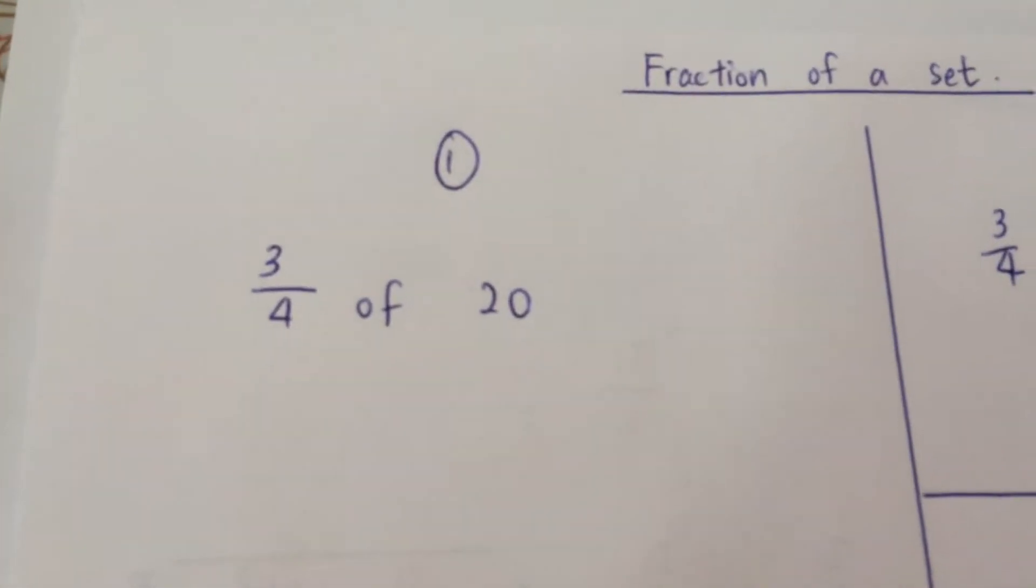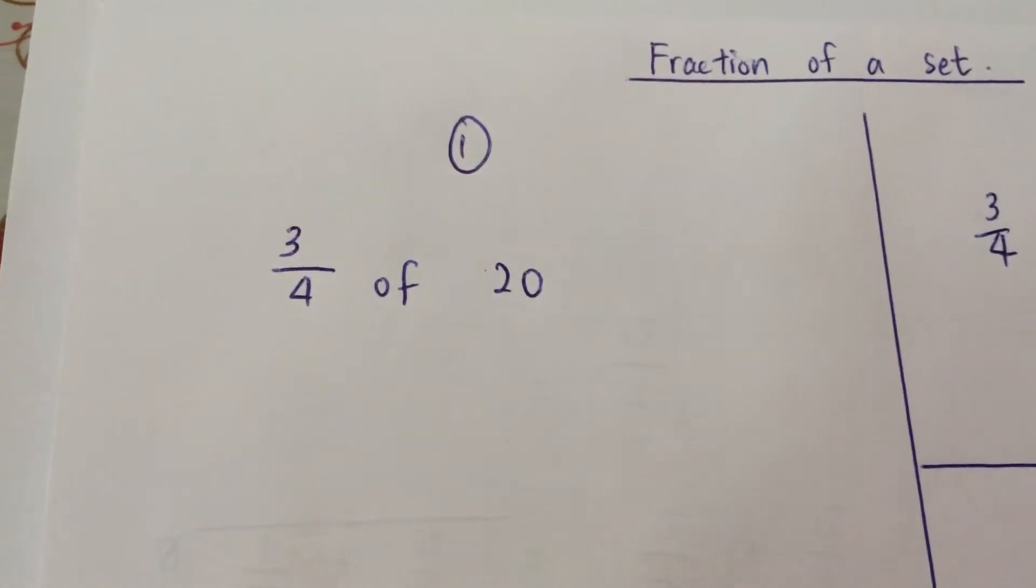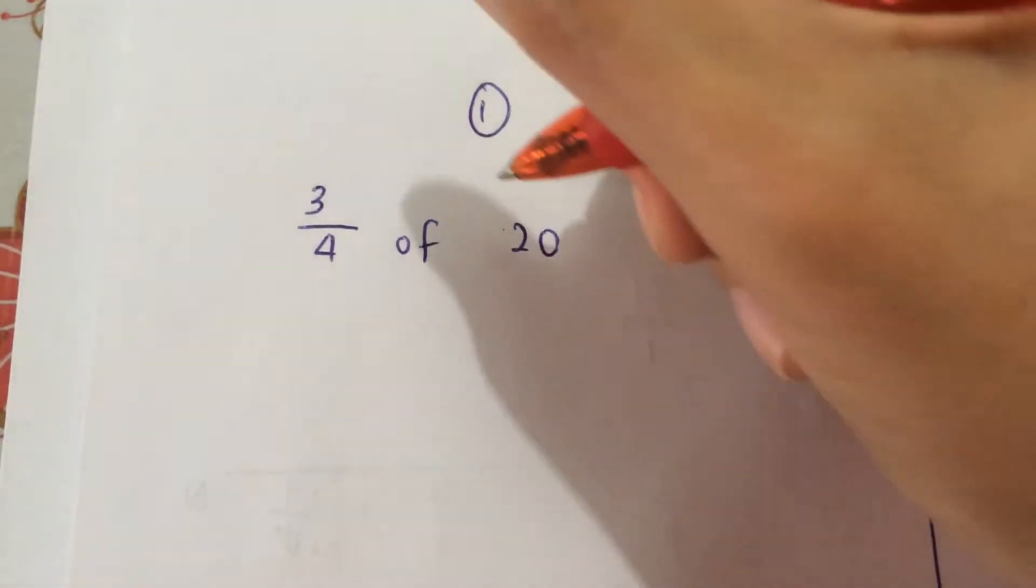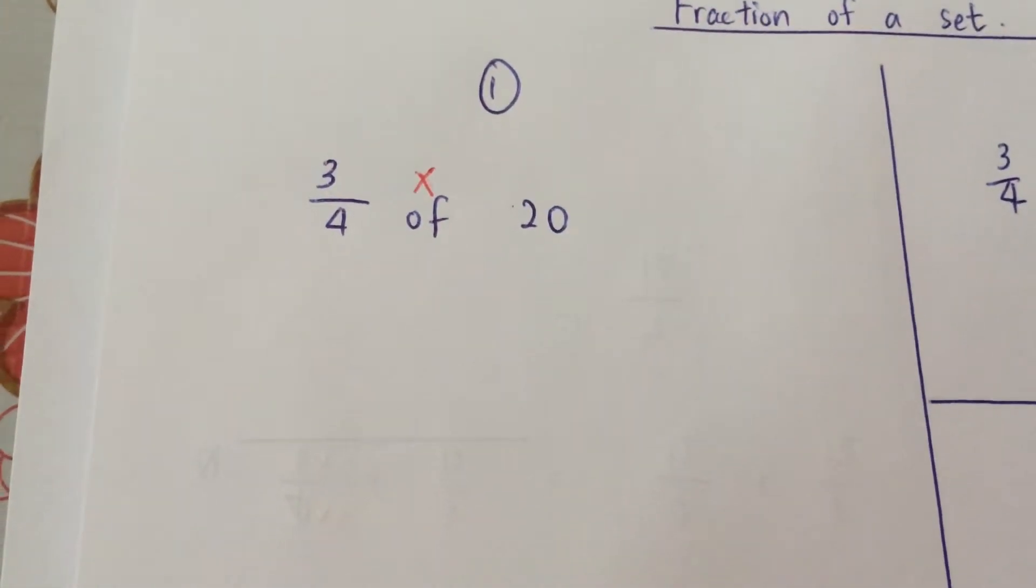Let's say a question asks you, what's 3 out of 4 of 20? Now, 'of' also means to multiply, so it means 3 out of 4 times 20.